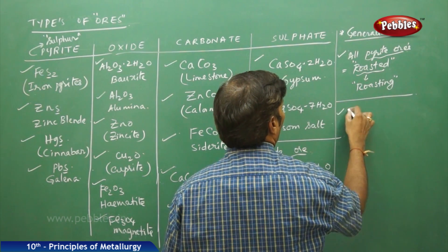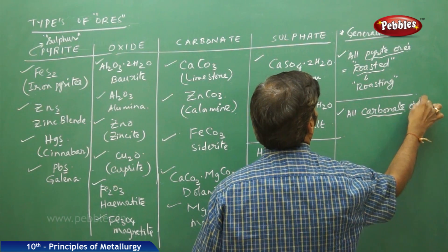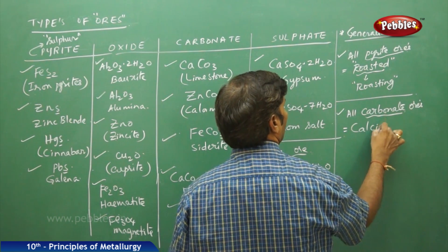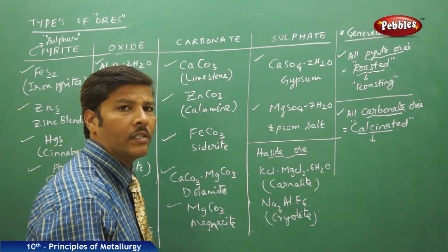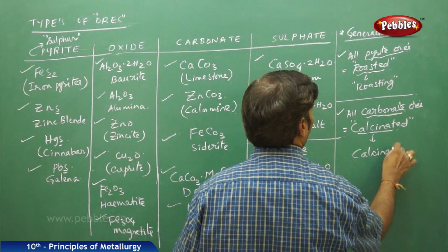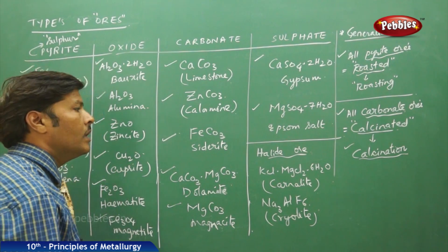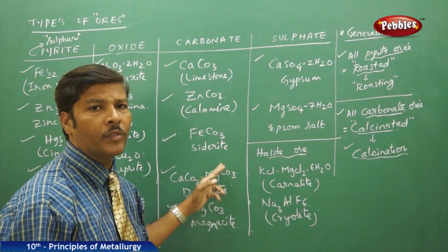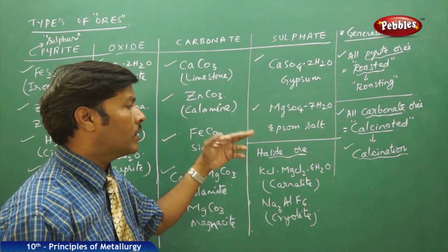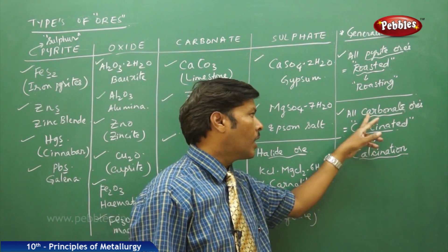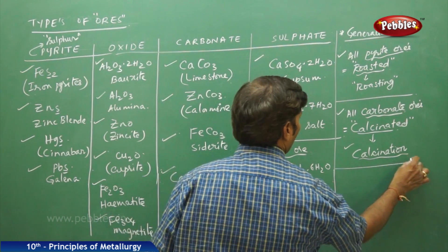Similarly, all carbonate ores are calcinated. Calcination is the process of heating the given mineral ores below their melting point in the absence of oxygen to a high temperature. So all carbonate ores are calcinated and all pyrite ores are roasted. Another process in metallurgy is smelting.